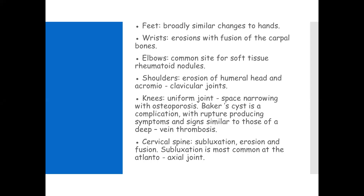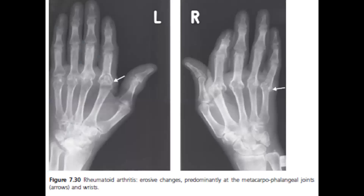In the feet there are broadly similar changes to the hands and wrists. At the elbows, erosion with fusions of the carpal bones occurs; the elbow is a common site for soft tissue rheumatoid nodules. In the shoulders, erosion of the humeral head and acromioclavicular joint occurs with uniform joint space narrowing and osteoporosis. In the cervical spine, subluxation, erosion, and fusion may occur, most commonly at the atlantoaxial joint.